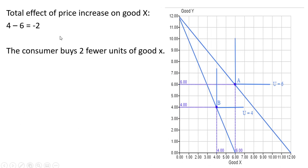Let's look at the total effect of the price increase on good x. The total effect is just moving from point a to point b. We see that the consumption of good x falls by 2 units — the consumer buys 2 fewer units of good x. That is the total effect of the price increase.